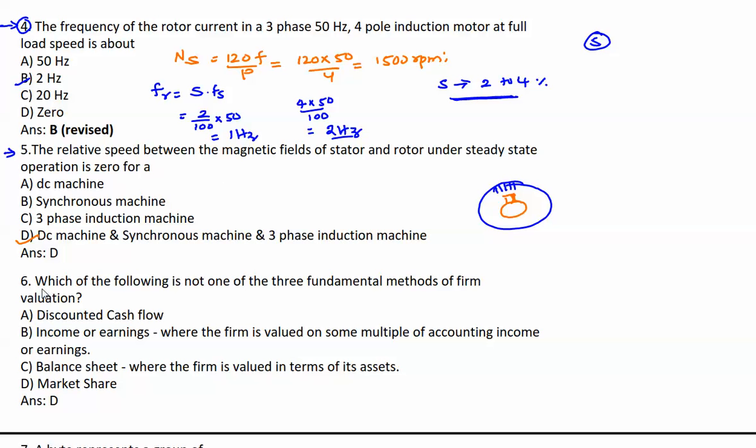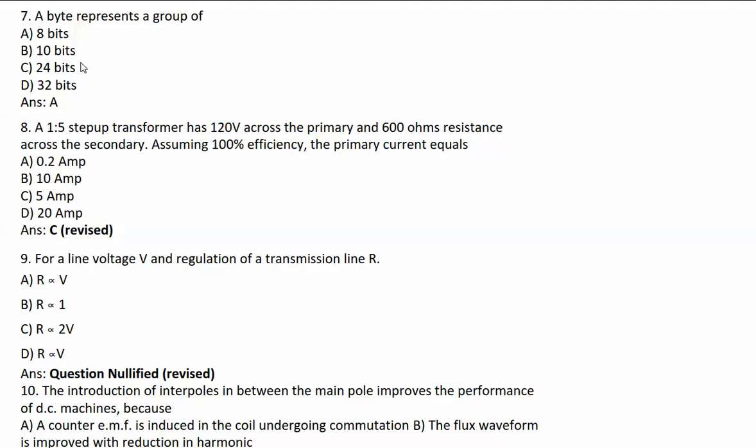Which of the following is not one of the three fundamental methods of firm valuation? Discounted cash flow, income or earnings where the firm is valued on some multiple of accounting income or earnings, balance sheet where the firm is valued in terms of its assets, and market share. Market share is the answer. Next question: A byte represents a group of how many bits? It is generally 8 bits - a question from computer basics.